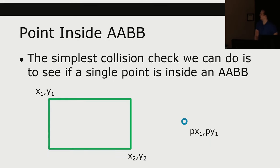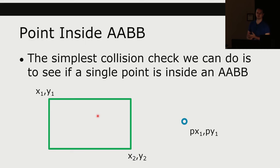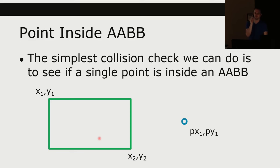Let's talk about some of the math of AABB calculations. The simplest thing we could do is to see if a single point is inside the rectangle. Rectangles can be represented in two main ways: specifying the top-left corner and the bottom-right corner, or specifying the top-left corner and then the width and height. You do need four values to specify a rectangle. You need some corner of the rectangle and then some way of representing how big it is — either the bottom-right or the width and height.